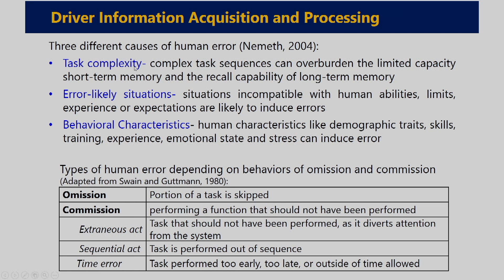Human errors happen due to various reasons. Task complexity — complex task sequences can overburden the limited capacity of short-term memory and the recall capability of long-term memory. If there are error-like situations incompatible with human capabilities, limitations, experience, or expectation, there is also a chance of error and accident. Human behavioral characteristics like demographic traits, skills, training, experience, emotional state, and stress can also induce error.